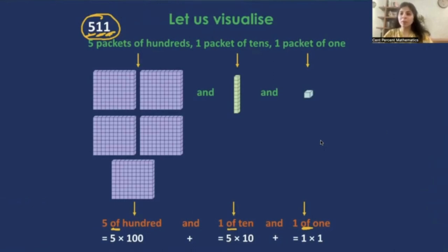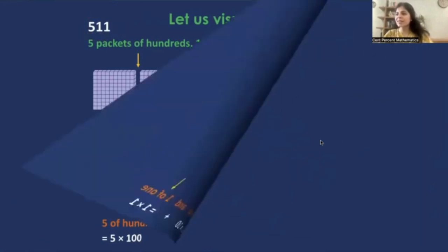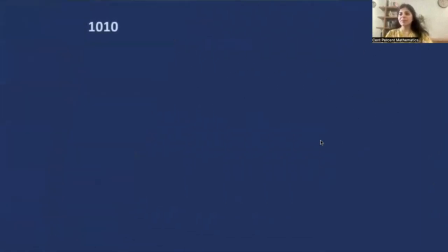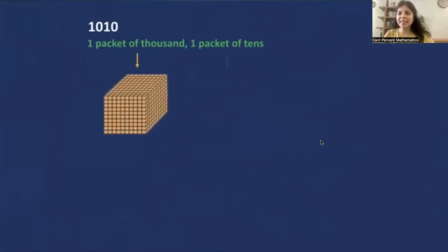Why is it important? We'll just tell you. I'll help you again to visualize the numeral 1010. So let's understand that by visualizing 1 packet of 1000, and 1 packet of 10s. So what do we get? 1 of 1000, that means 1 times 1000, and 1 of 10, that means 1 times 10.